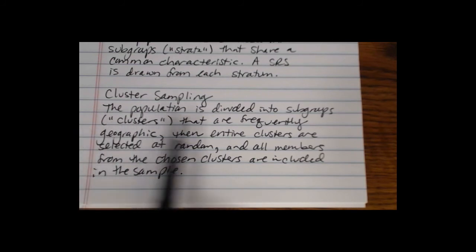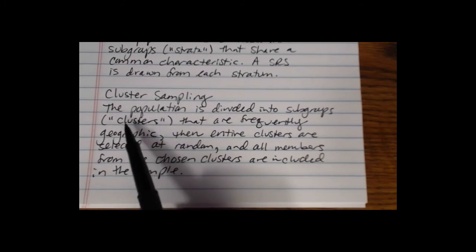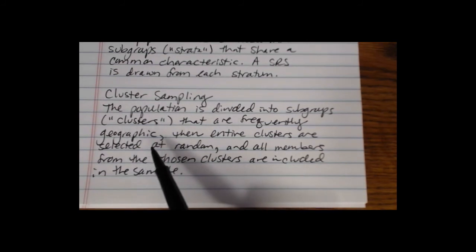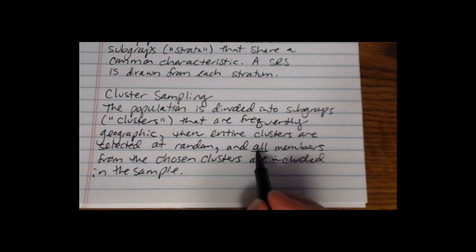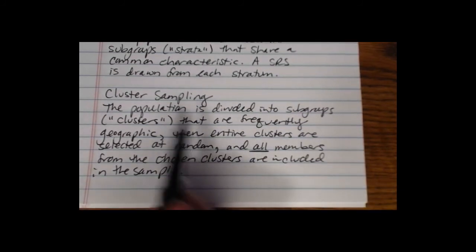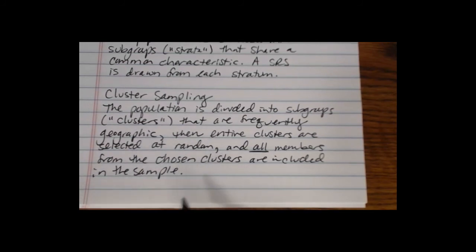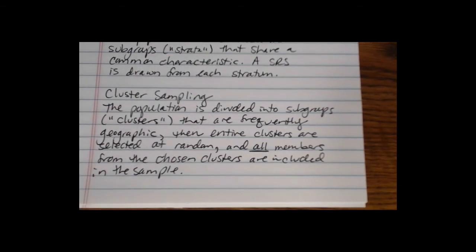Let's say we have all of the voters in Whatcom County, we're going to divide them into 10 different voting regions or 10 different clusters. Then we select entire clusters at random. So let's say we randomly selected voting regions number 2, 5, and 7 from our 10. Then we would include all of the voters in regions 2, 5, and 7 in the final sample. And none of the voters in any of the clusters that were not selected would end up in the final sample. So in cluster sampling, only some of the subgroups end up in the final sample. Whereas in stratified sampling, all of the subgroups end up in the final sample.